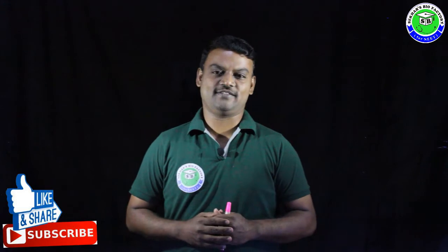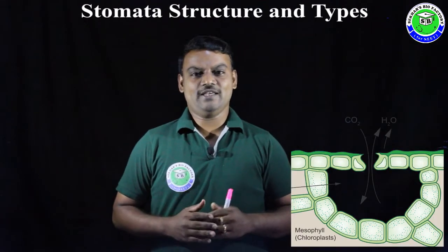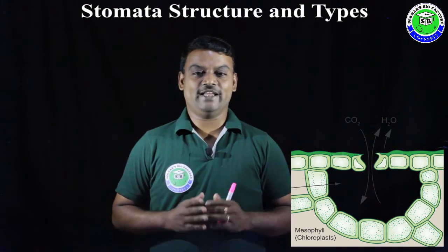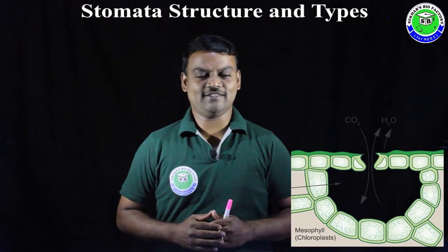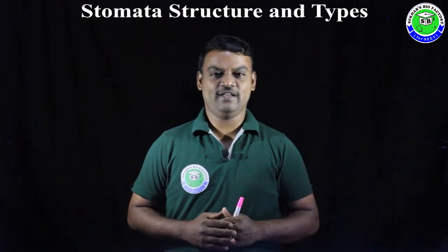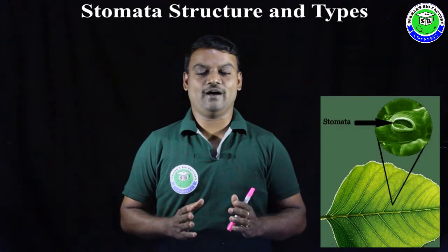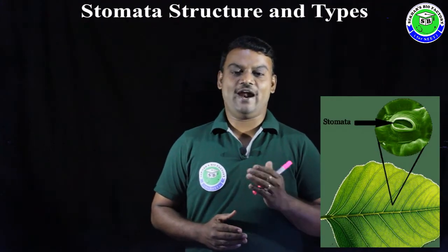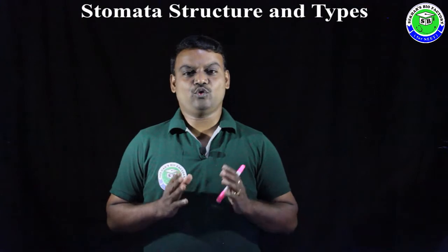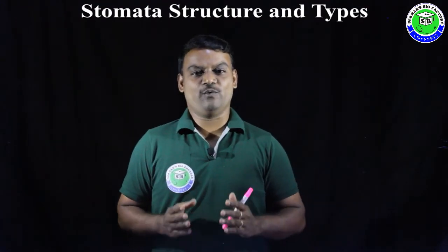In this video I am going to explain the structure and types of stomata. Stomata is a main structure associated with transpiration and exchange of gases during photosynthesis and respiration. These stomata are located on the surface of the leaf, and when they open and close they facilitate both transpiration and exchange of gases.